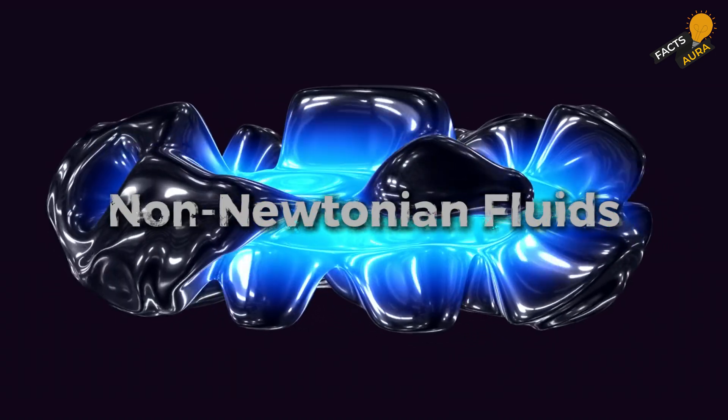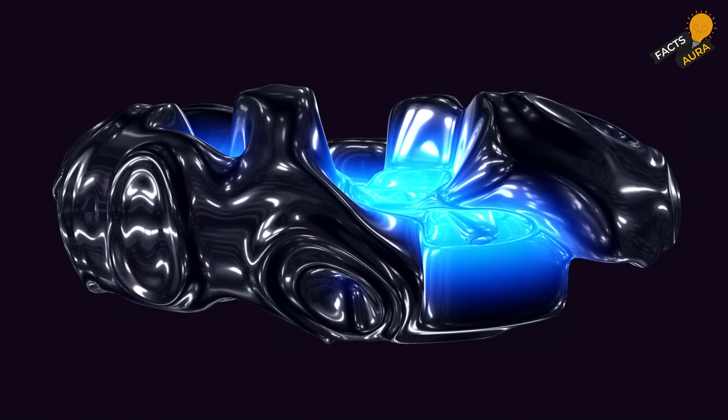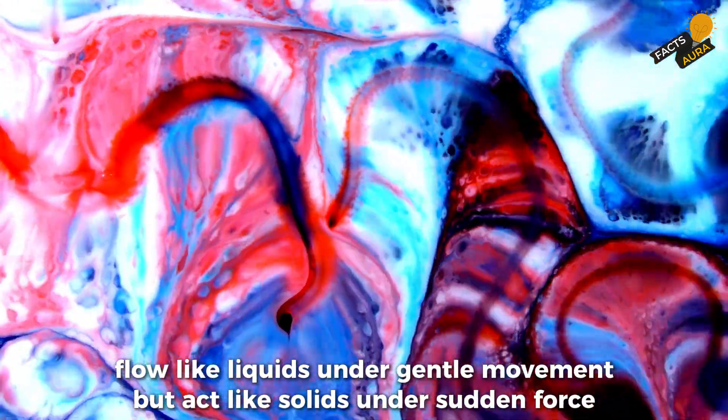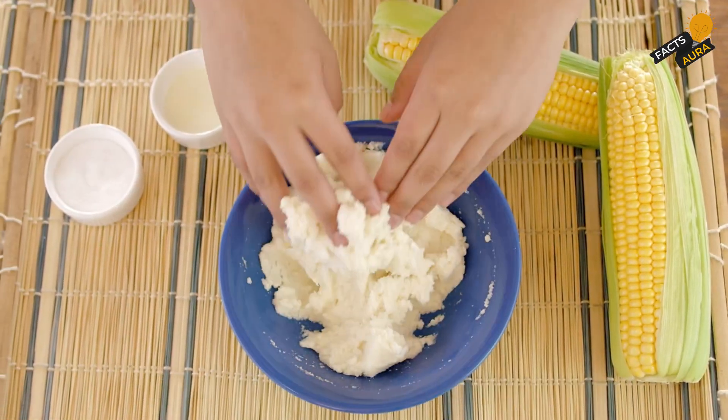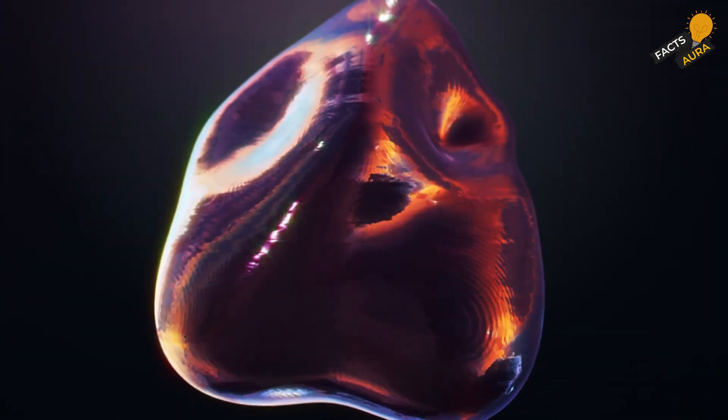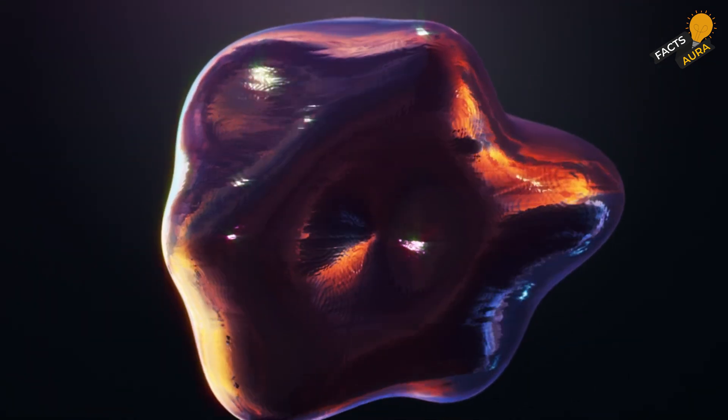Let's move to non-Newtonian fluids. These bizarre substances, like cornstarch and water mixtures, flow like liquids under gentle movement but act like solids under sudden force. Punch a bowl of cornstarch and it's hard as rock. Touch it gently and it flows like water. Non-Newtonian fluids seem to rewrite the rules of how substances should behave.